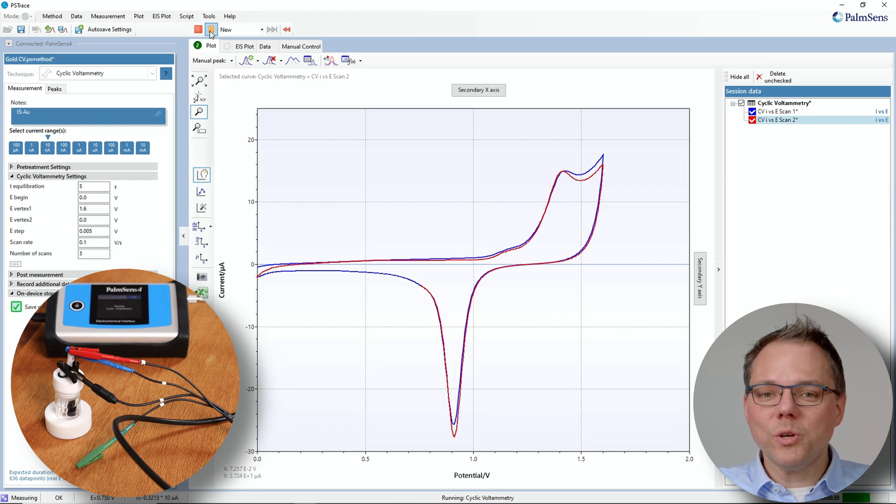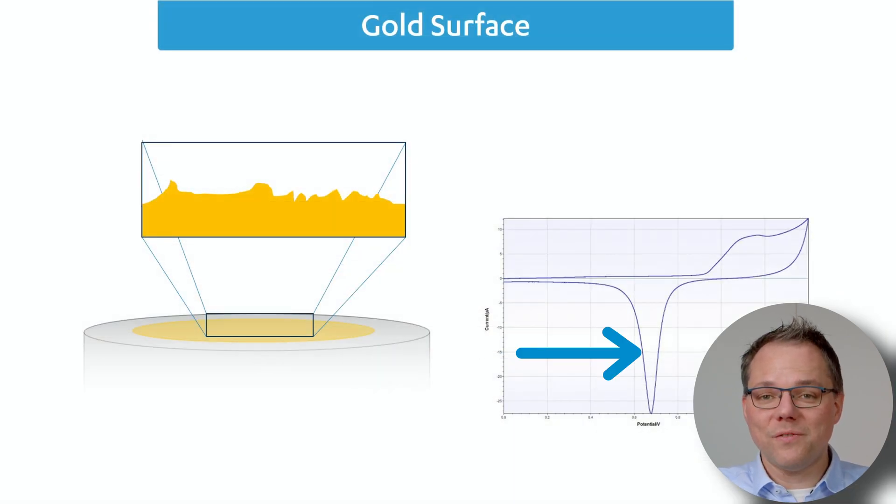Nice property of gold. Then we're going to more negative potentials. Again the gold gets reduced. We get this very sharp reduction peak that you see here in the CV.